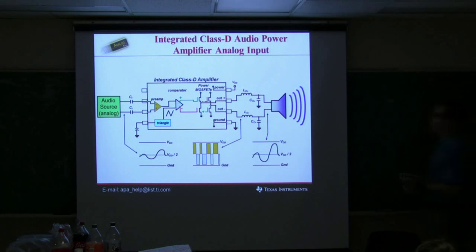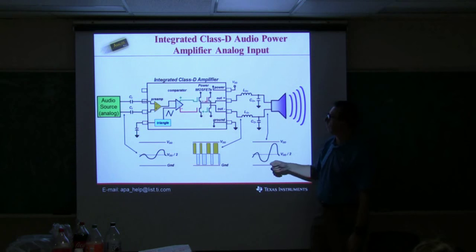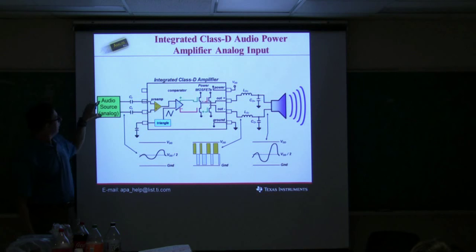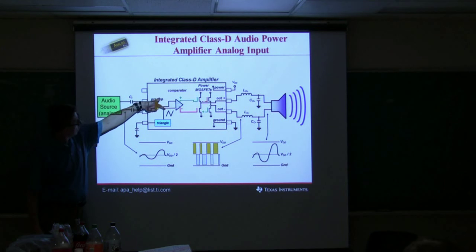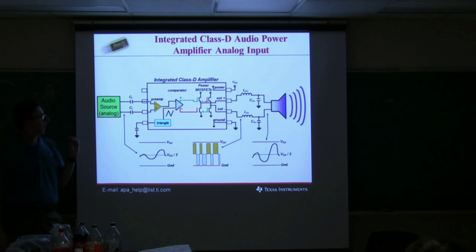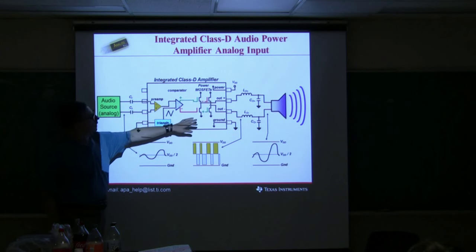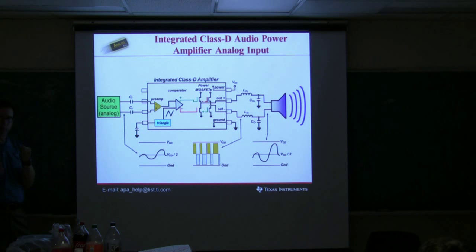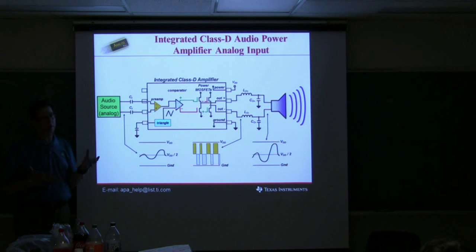Here's another illustration of what I just discussed. We put the audio input to the input of the amplifier, we have the triangle wave generator input to the comparator, and that causes the outputs to change state. We use an H-bridge because that allows us to drive the speaker in what we call bridge-tied load configuration — driving both ends of the speaker almost 180 degrees out of phase. You end up with twice as much voltage across the speaker, which gives you four times more power delivered to the load. That's really important for low-power applications running off a lithium-ion battery like a cell phone.